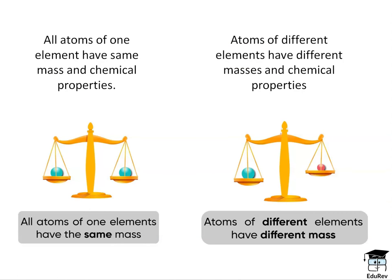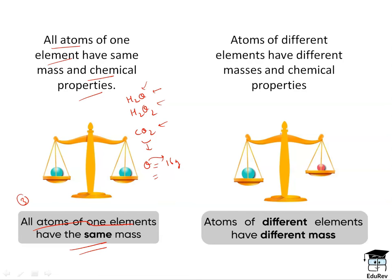The third postulate proposed by Dalton was: all atoms of one element have the same mass and chemical properties. For example, oxygen is present in different compounds — H₂O, H₂O₂, CO₂ — but in all these compounds, the properties of oxygen atoms are the same. Its mass is the same, that is 16 grams, and oxygen remains oxygen in all these compounds; its properties do not change.